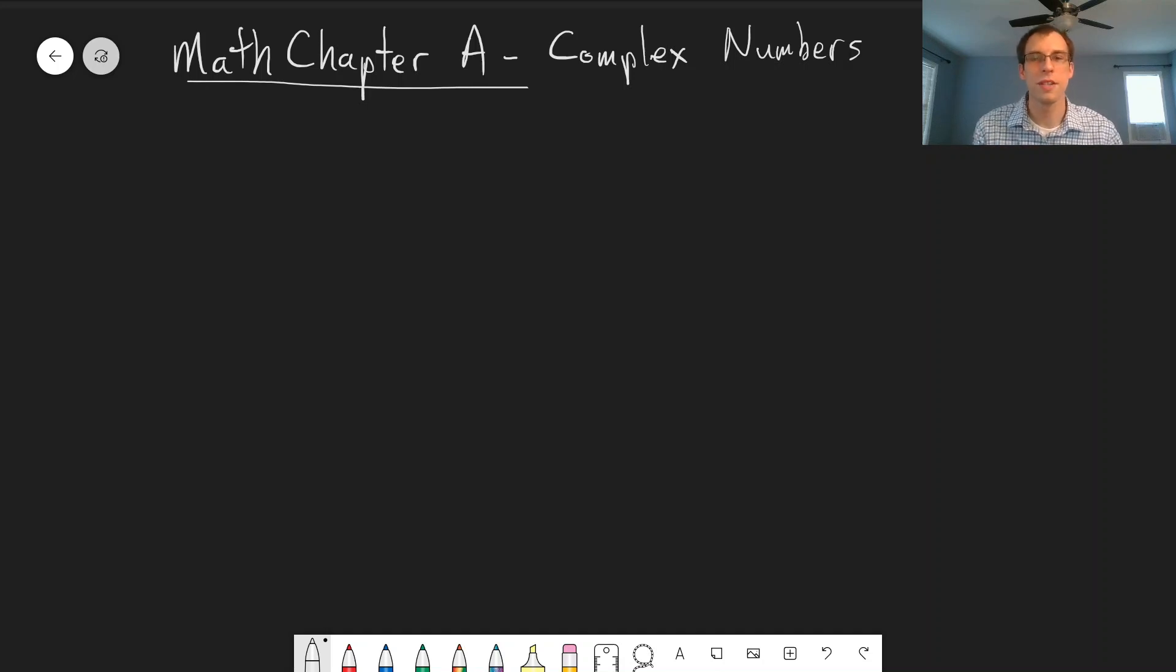Before we start into chapter 2, this is a brief interlude that we'll take. There are a few of these throughout the course of the semester where if you need a little bit of math review on some specific topics, we'll have those. So this is math chapter A, between chapters 1 and 2 in your textbook, and this is about complex numbers.